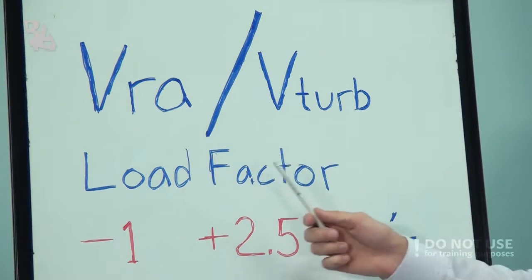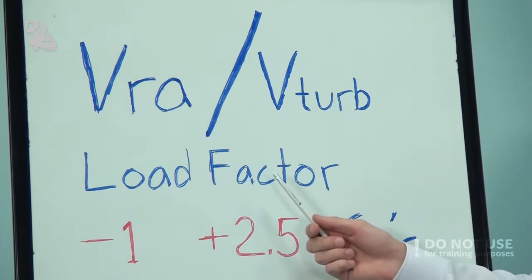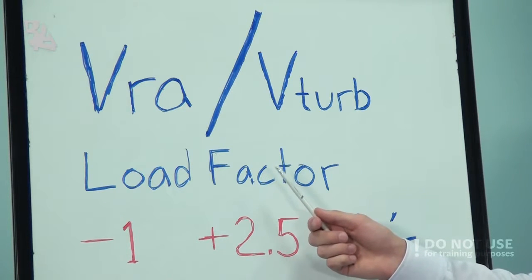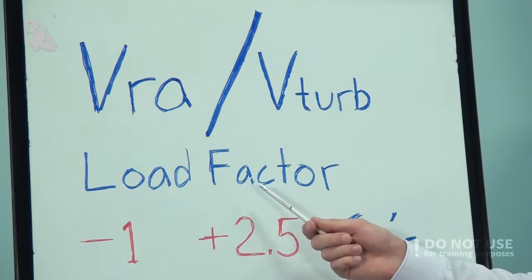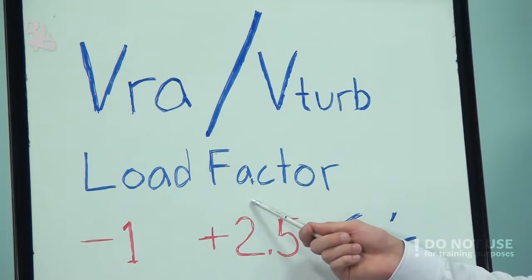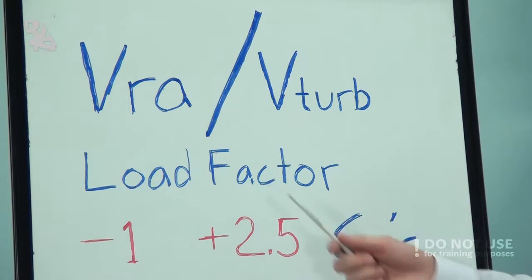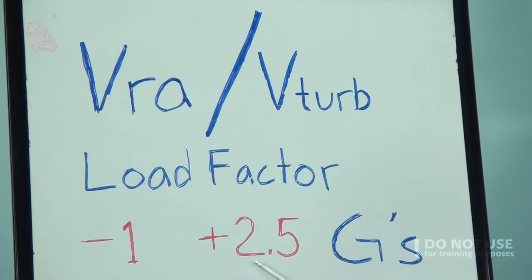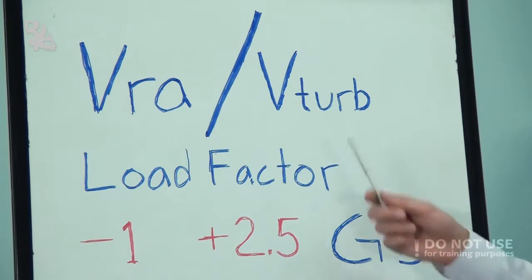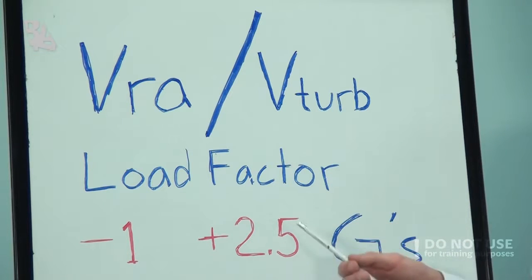When maintaining the turbulence penetration speed or rough air speed, you will have a maximum safe margin in case of big changes in airspeed and the likelihood of exceeding the maximum load factor. A large transport aircraft has a maximum load factor of negative 1G and positive 2.5G. If we exceed it, we may get permanent structural damage.